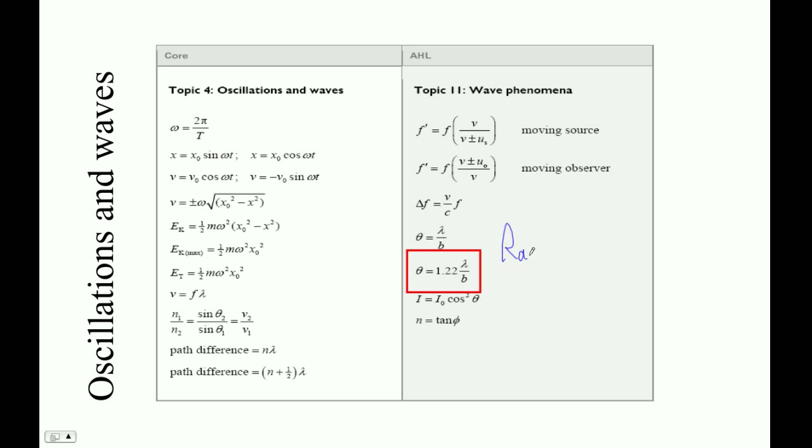Okay, this formula is the Rayleigh Criterion. Is there an I in there? We'll see how it's spelled. But basically this is for telling the resolving power of telescopes or any device.